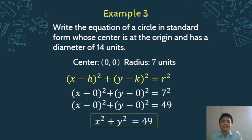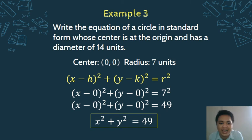x minus nothing is x, y minus nothing is y, so the standard form of the circle with center at the origin and radius 7 is: x² + y² = 49. Go ahead and copy and digest our last example.